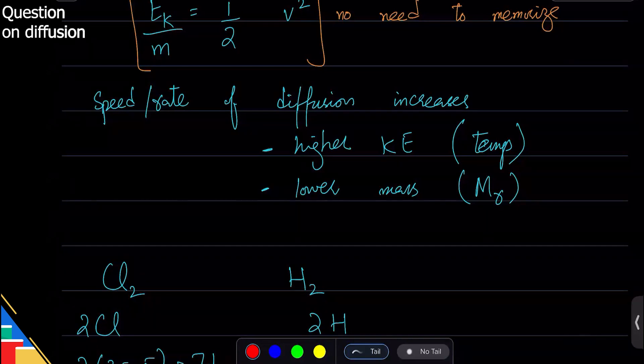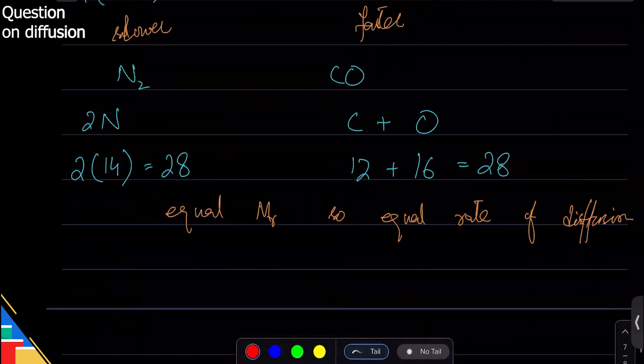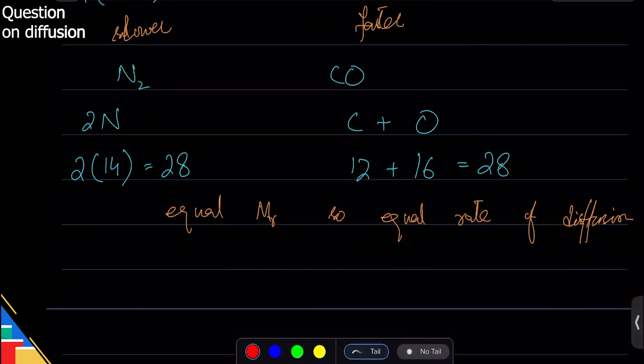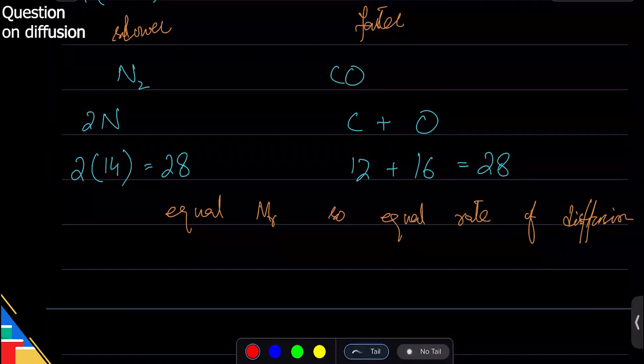For example, if I want nitrogen and carbon monoxide to diffuse differently, I can't change their mass, but I can change their kinetic energy. I can heat one up and cool the other one down, and the hotter one will move faster.